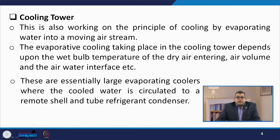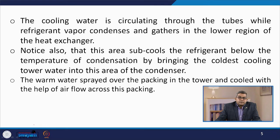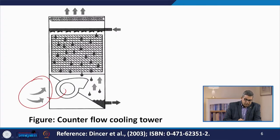These are essentially large evaporating coolers where chilled water is circulated to a remote shell and tube refrigerant condenser. The cooling water is circulated through the tubes while refrigerant vapor condenses and gathers in the lower region of the heat exchanger. This area subcools the refrigerant below the condensation temperature by bringing the coldest cooling tower water into this area of the condenser. The warm water is sprayed over the packing in the tower and cooled with the help of airflow across the packing, where air circulates through the mesh packing and the water droplets exchange heat.